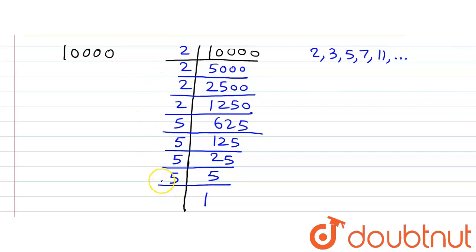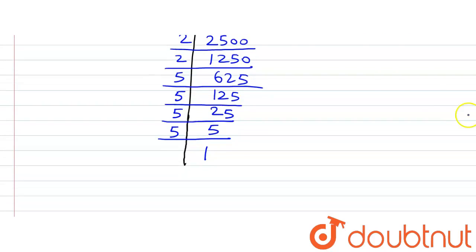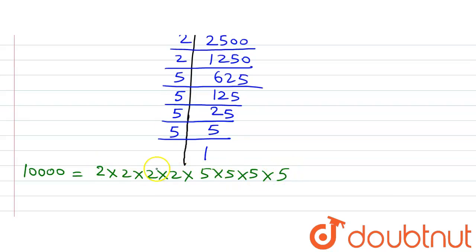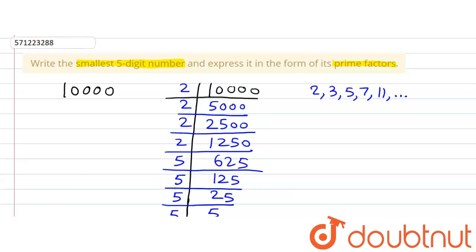10000 = 2 × 2 × 2 × 2 × 5 × 5 × 5 × 5. There are four 2s and four 5s. This is how we represent the smallest five-digit number in the form of its prime factors.